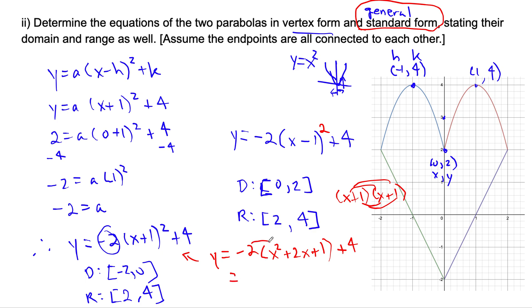And now if we multiply, expand this -2 to everything, we have -2x² - 4x, -2 multiplied by +1 is -2. And -2 + 4 is +2.